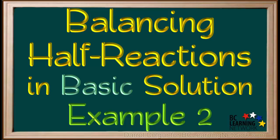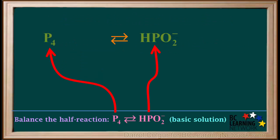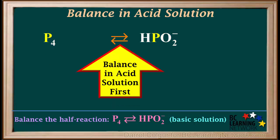Here, we'll go through an example of balancing a half reaction in basic solution. We're asked to balance the half reaction P4 gives HPO2⁻ taking place in basic solution. We start by adding the P4 and HPO2⁻ to the equation. Even though we're asked to balance this half reaction in basic solution, we start out by balancing it in acidic solution. Later, we'll change it to basic.